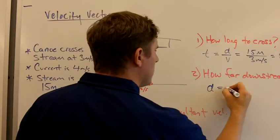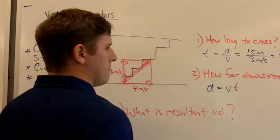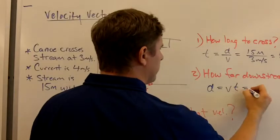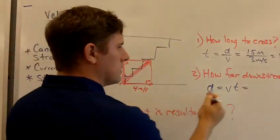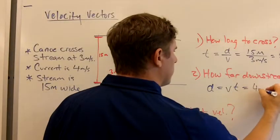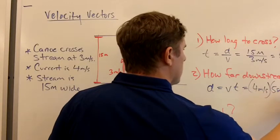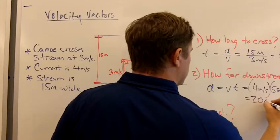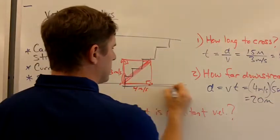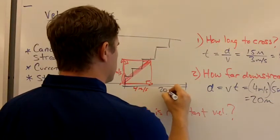And each second it takes to go across, it'll take four meters downstream. So here we say the distance downstream is going to equal the downstream velocity times the time. Time we said was five. The downstream velocity is four meters per second. So four meters per second times five seconds is going to be 20 meters. That's how far down. So this distance in this direction would be 20 meters.